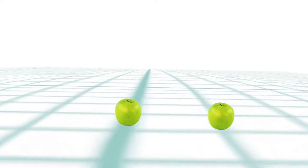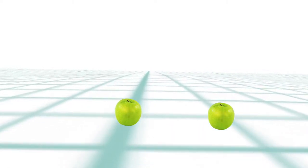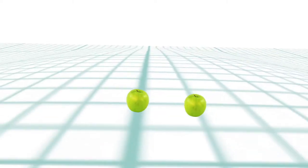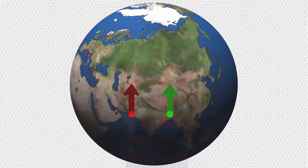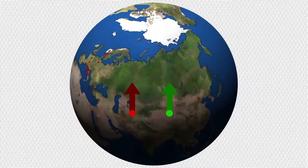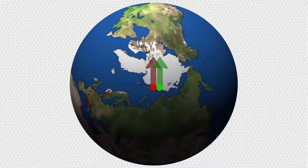But what if space-time was curved? This time the two apples will still travel in straight lines but on a curved space-time. This is like the case of the two people on earth who also travelled in straight lines but on a curved surface and so they met.